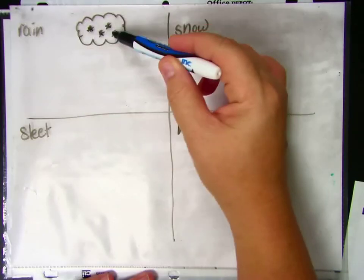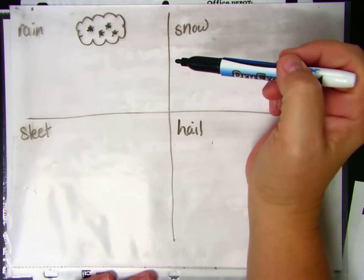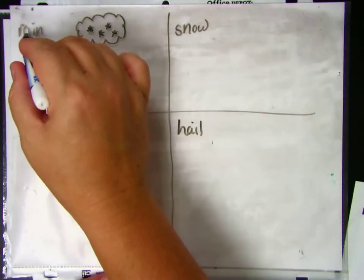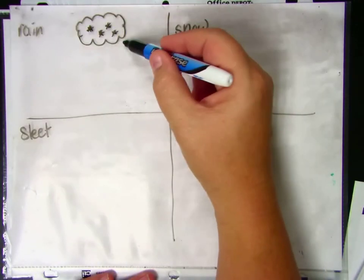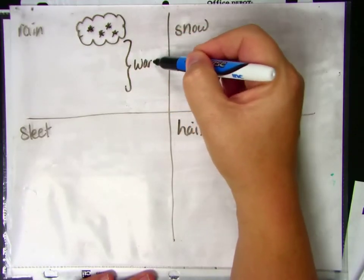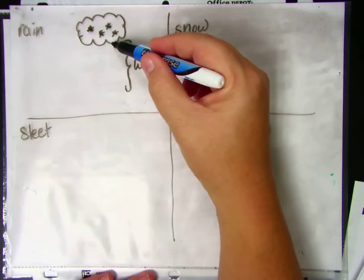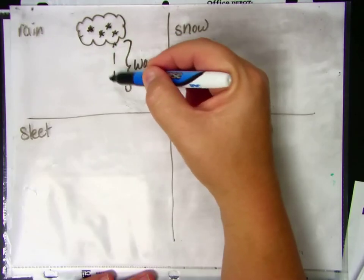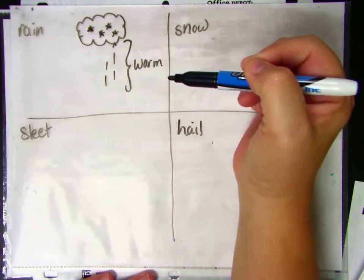And the reason that we have rain is because the air below the clouds is warm, and when that air is warm the ice crystals drop but they melt on the way down. So that's why we have rain.